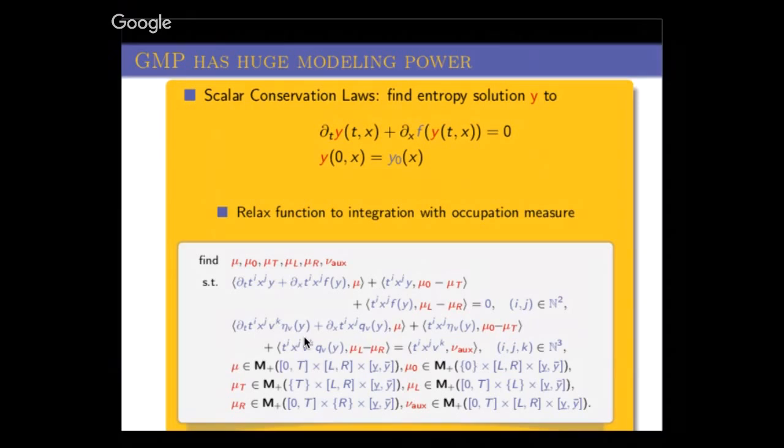It's always the same idea: you have some object, and your problem is nonlinear in this object. The idea is you relax your object to a measure, and then you have linear constraints on your measure.